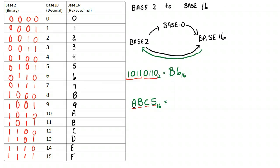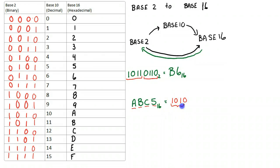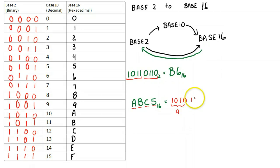So if I take a look, A is represented as 1010 — so 1010 is A. B is represented as 1011. So this is my B.